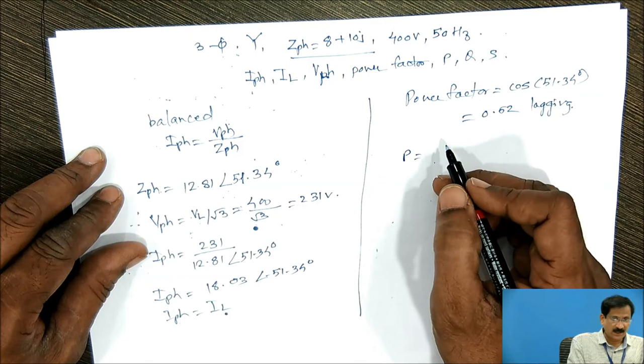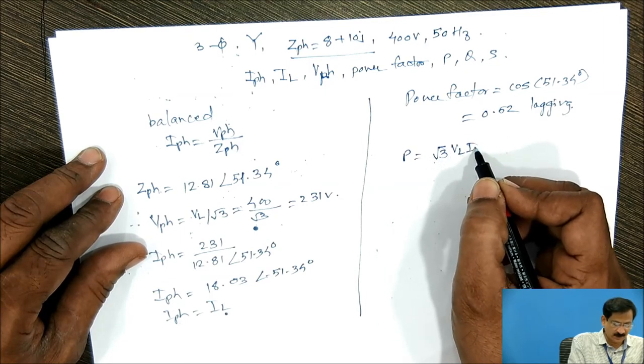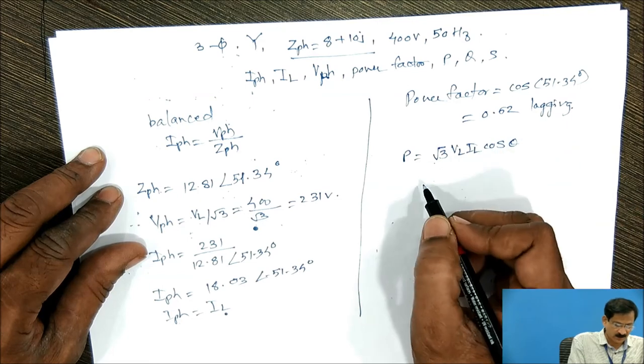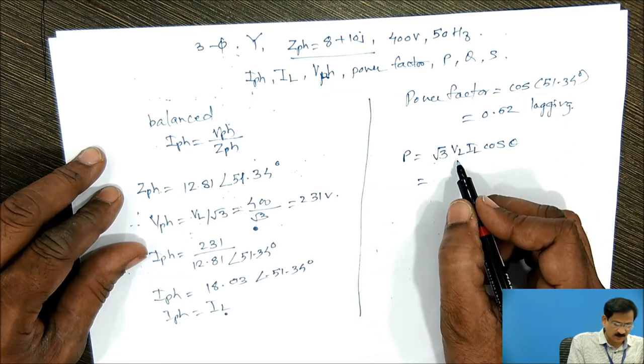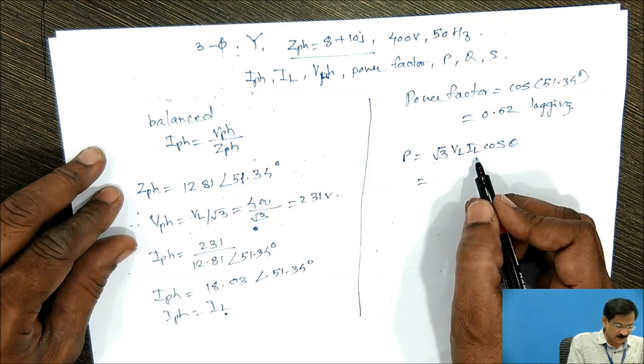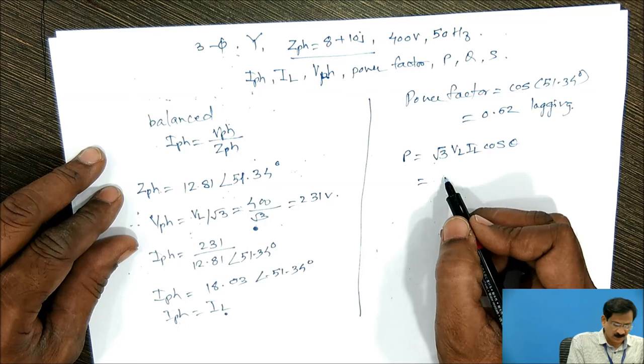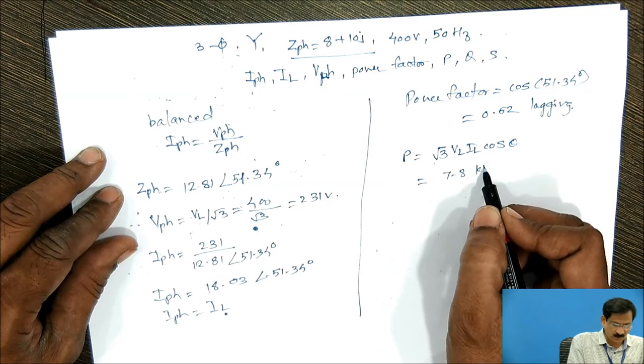Now coming towards active power, root 3 VL IL cos of theta, comes out to be, putting value of VL 400 volts, IL 18.03, cos of 51 degree, comes out to be 7.8 kilowatt. So in this way, we got Q which is lagging.